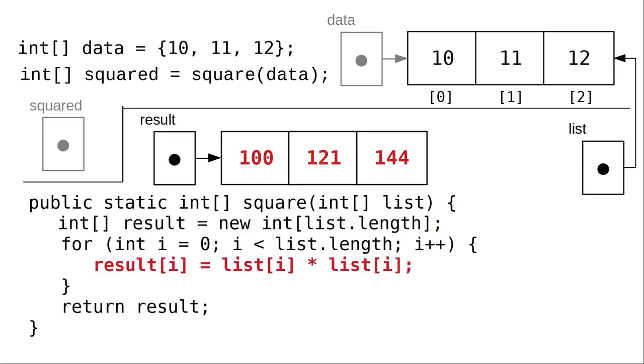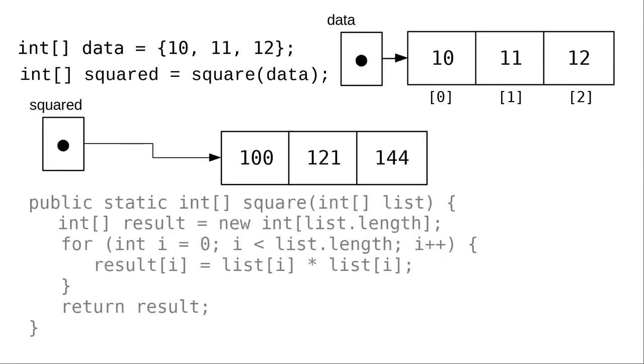And our loop assigns values to the new array. When we return the result, the reference to the result array is assigned to squared. And we now have a separate array with the squared numbers, leaving our original array untouched.